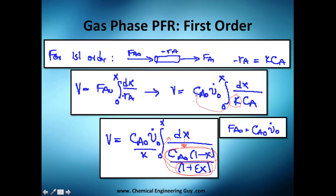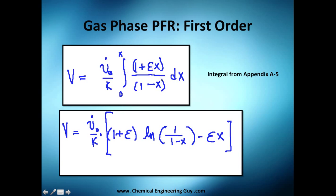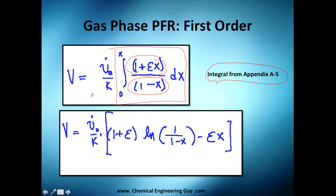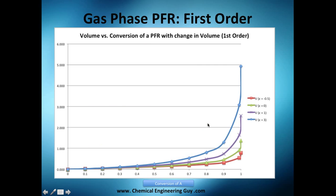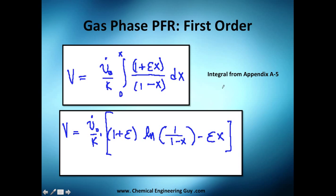Since k is a constant, we can pull it out of the integral. The division terms combine through double-division to become multiplication. Checking appendix A5 of the textbook gives us the solution to this integral. The result is: the same prefactor times the quantity (1 + epsilon) times the natural logarithm of 1/(1 - x), minus epsilon times x — integrated from 0 to x. Note that if epsilon equals zero, the logarithm term simplifies and you recover the standard liquid-phase first-order result.